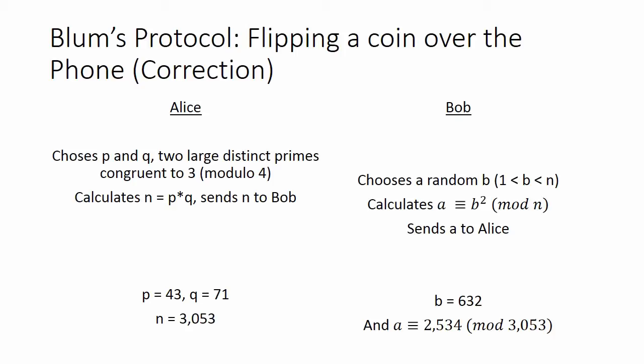One of the ways we thought of to stop Bob from actually cheating in this coin flip protocol is to use encryption as well as the protocol. During the step in which Bob computes his a, he would also take his b, encrypt it, and send that to Alice along with his a.